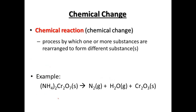A chemical reaction is the process by which one or more substances are rearranged to form different substances. For example, ammonium dichromate will break down to nitrogen gas, water, and chromium oxide — we're making different substances. So any time a new or different substance is produced, we've had a chemical reaction.